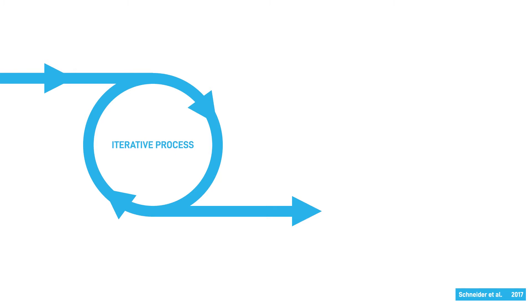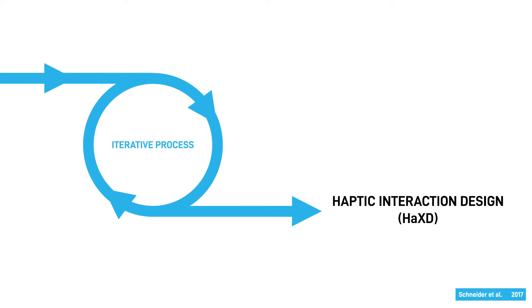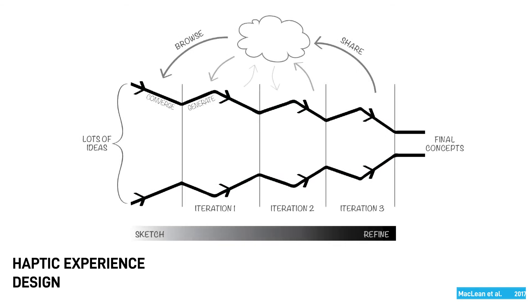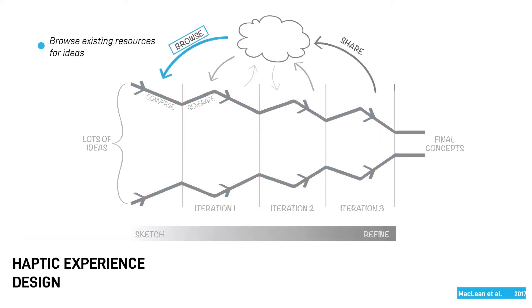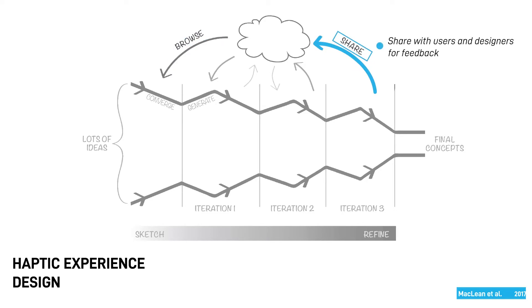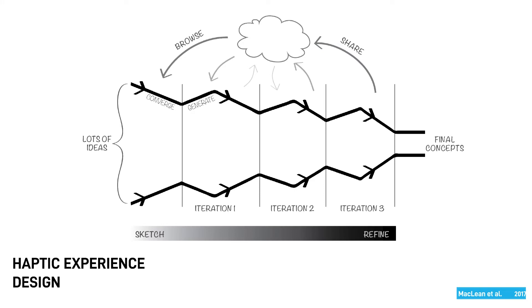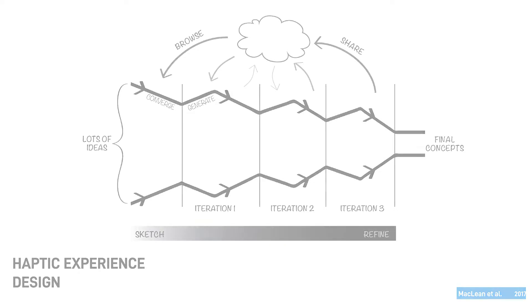Hapticians often design haptic content as an iterative process that also includes other sensory modalities and goals of the applications. This practice is known as haptic experience design, or HACS-D as defined by Schneider and McLean. Haptic interaction design is a subfield of interaction design and starts in a similar manner by sketching many ideas and subsequently refining a few of them to be polished into products. Designers browse existing resources for inspiration and ideas, and they share their designs with colleagues or end users for feedback. A growing set of public resources are emerging to support these design activities with haptic hardware.